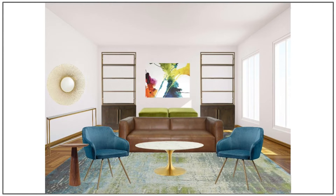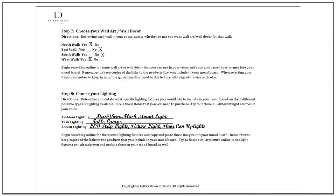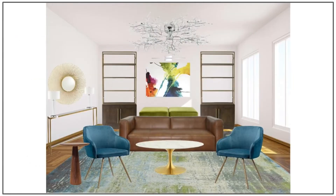Next is my favorite part of the design — step 8, choose your lighting. For ambient lighting, I want a large flush or semi-flush mount light. For task lighting, I'm going to use table lamps on the console table. For accent lighting, I'll use LED strip lights in the bookcases, a picture light for the artwork, and floor can up lights for the indoor trees. I've gone contemporary all the way, choosing a statement flush mount light, beautiful table lamps, and a picture light — all in chrome finish, which is a great contrast with the brass in the room.